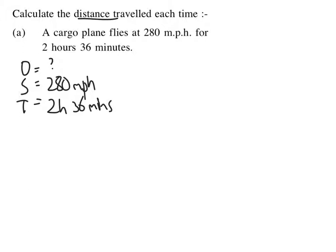Now, I can't put 2 hours 36 minutes into a formula. I need to change that into decimal time. And how I do that is I take the hours and then add it to the number of minutes over 60, as there are 60 minutes in an hour. So 2 plus 36 over 60, put that into my calculator, and I get 2.6 hours.